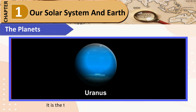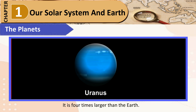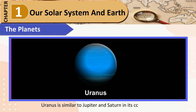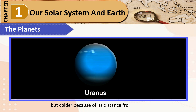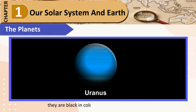Uranus: It is the third-largest planet after Jupiter and Saturn, and is 4 times larger than the Earth. Uranus is similar to Jupiter and Saturn in its composition, but colder because of its greater distance from the Sun. Uranus also has thin rings, but they cannot be seen from the Earth as they are black in color. It has 27 natural satellites.